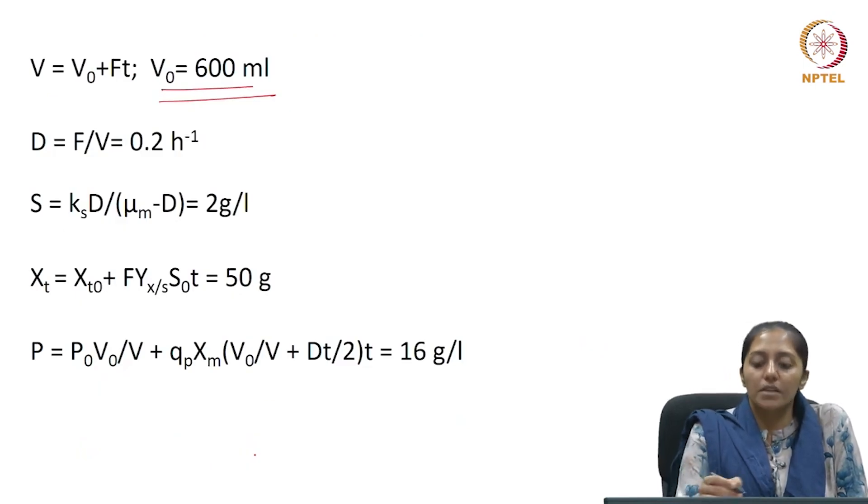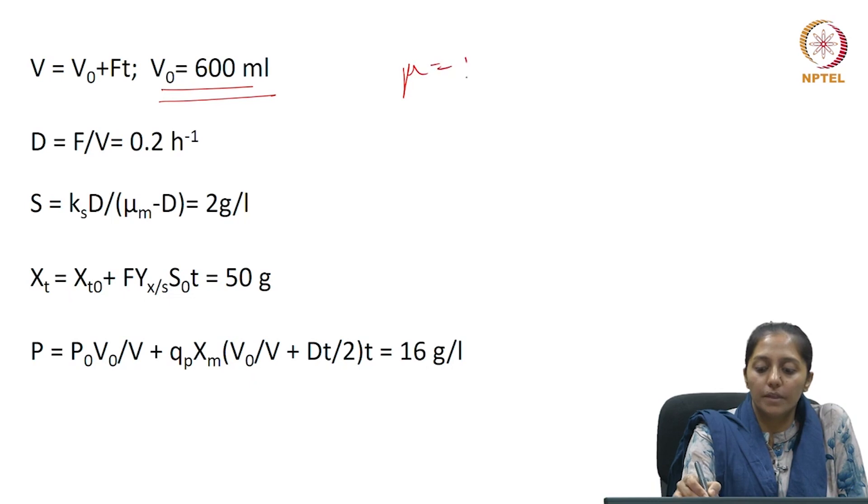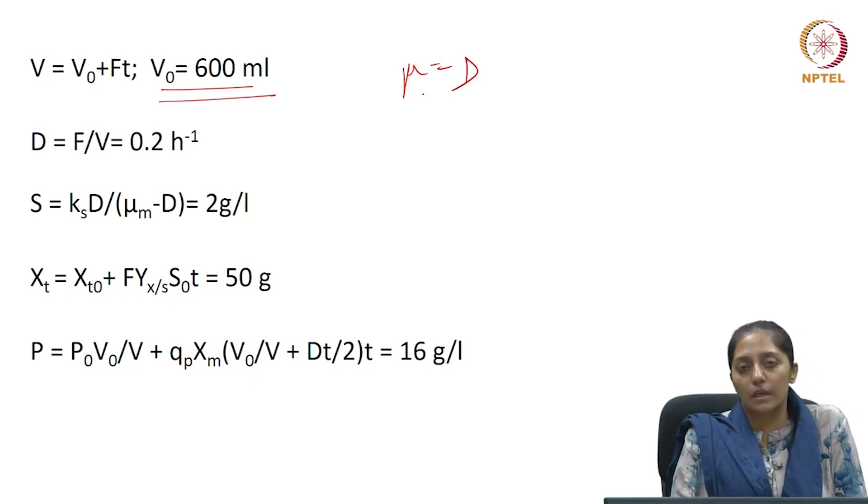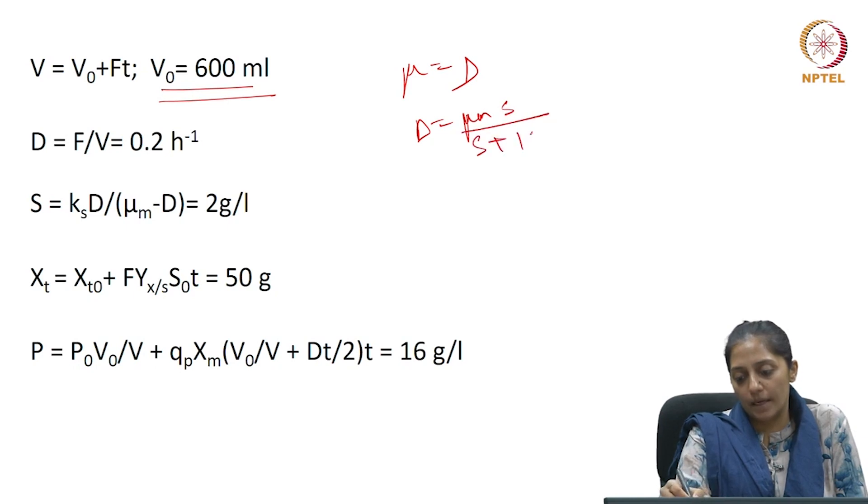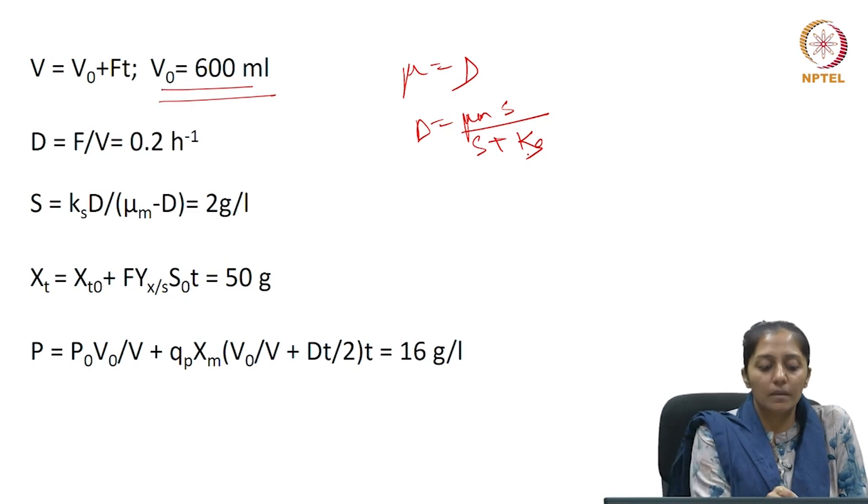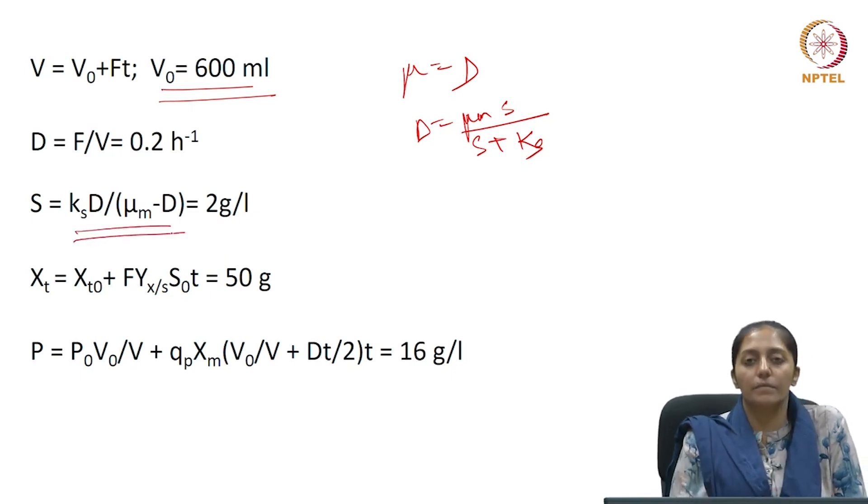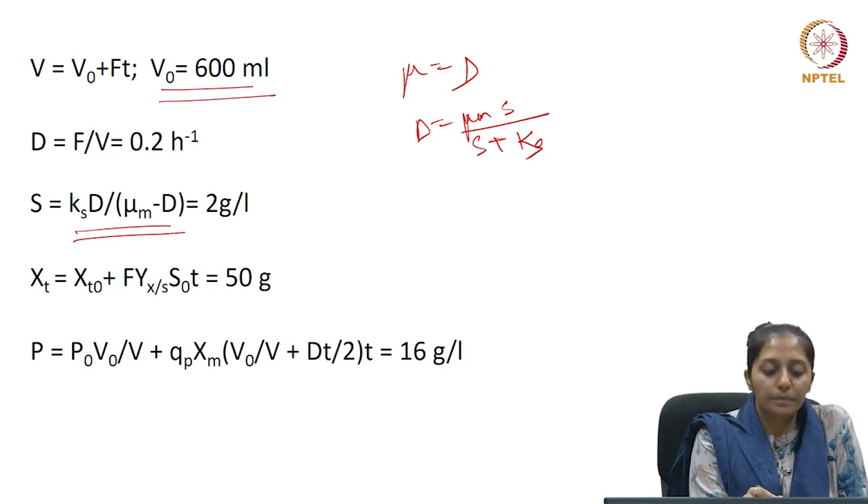So, at quasi-steady state we know μ is equals to D, and we also know the culture is following Monod's kinetics. So, if you remember the rearrangement of the equation D equals μ_m S over S plus K_s, if we rearrange this, we can determine the value of S in terms of the dilution rate, μ_m, and K_s given.